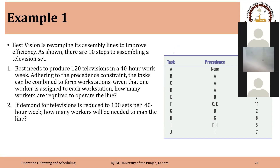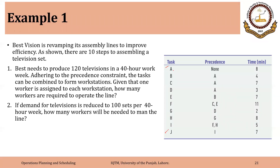There are a total of 10 tasks or elements starting from A to J. They have to be performed in the sequence shown, but you can combine two consecutive tasks if possible. Combining tasks means they can be performed at the same workstation. Given that one worker is assigned to each workstation, how many workers are required to operate the line? If demand for televisions is reduced to 100 sets per 40-hour week, how many workers will be needed?